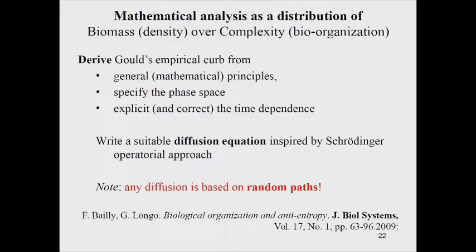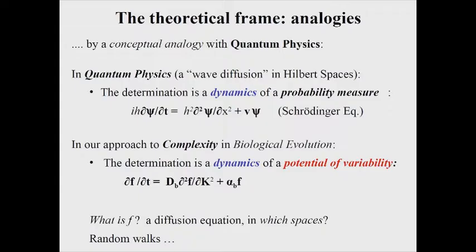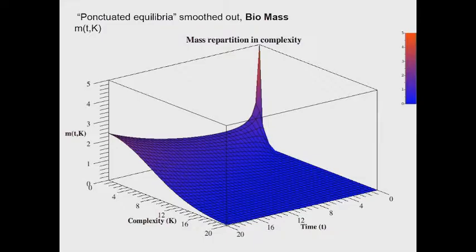Technically, this is done by mimicking a Schrödinger equation, which gives a dynamics of a probability measure, while we did describe the dynamics of a potential of variability. And this is the mathematical model.